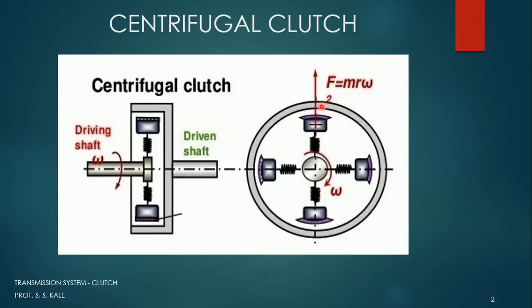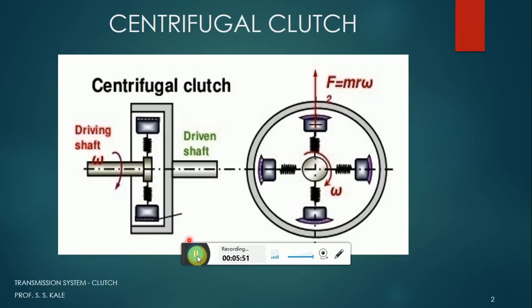For disengaging also, we are not having any kind of pedal. For disengagement, we simply have to reduce the speed. If speed reduces, the centrifugal force acting on these parts also reduces, the spring force becomes dominant, and the parts move towards the center, breaking the contact between the friction material and the outer plate. Hence power will not be transmitted. So automatically by the sense of speed — if speed increases it engages, if speed reduces it disengages — this is how the centrifugal clutch works.